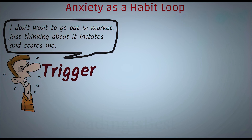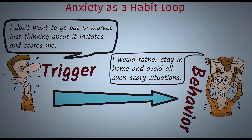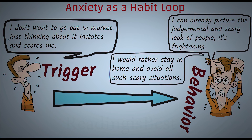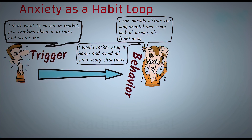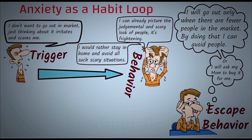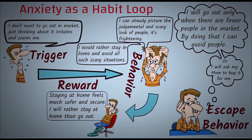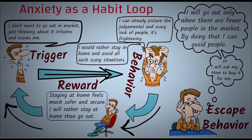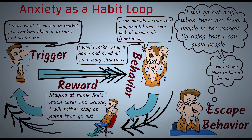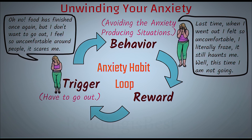Let's begin with a case. For someone with social anxiety, just the thought of having to go out in a market or among people triggers the behavior of avoiding the act of going out as much as possible, so that you don't have to deal with such anxiety-producing situations. If it becomes absolutely necessary to go out, you tend to choose a path where there is no one, even if that path takes longer or is inconvenient. This maladaptive escape behavior rewards them with the feeling of safety. Here, trigger, behavior, and reward are the pattern of a habit loop.